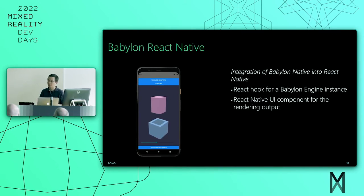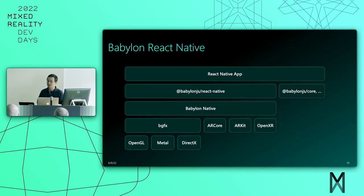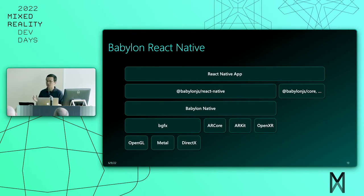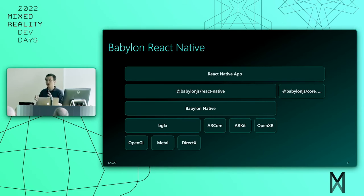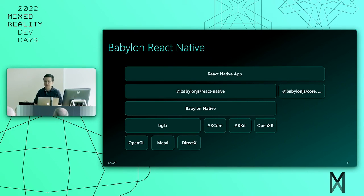Here's a breakdown of what a React Native application looks like. At the top is the application itself, which relies on two main NPM packages. On the right you have Babylon.js core — the same package you would use if you were developing for a web application. On the left is Babylon.js React Native, which is the glue code that connects Babylon Native with React Native. And of course Babylon Native then depends on all the things that it depends on.